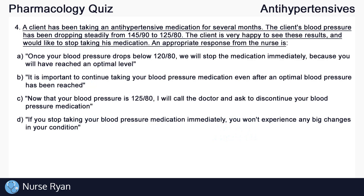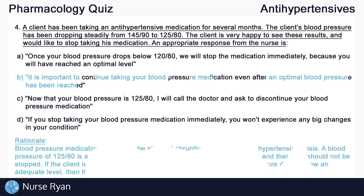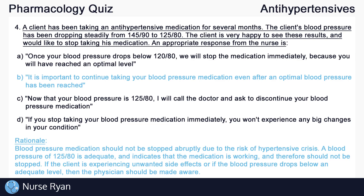Question number four: a client has been taking an antihypertensive medication for several months. The client's blood pressure has been dropping steadily from 145 over 90 down to 125 over 80. The client is very happy to see these results and would like to stop taking his medication. An appropriate response from the nurse is... The answer here is B. It is important to continue taking your blood pressure medication even after an optimal blood pressure has been reached. Blood pressure medication should not be stopped abruptly due to the risk of hypertensive crisis. A blood pressure of 125 over 80 is adequate and indicates that the medication is working and therefore should not be stopped. If the client is experiencing unwanted side effects or if the blood pressure drops below an adequate level, then the physician should be made aware.